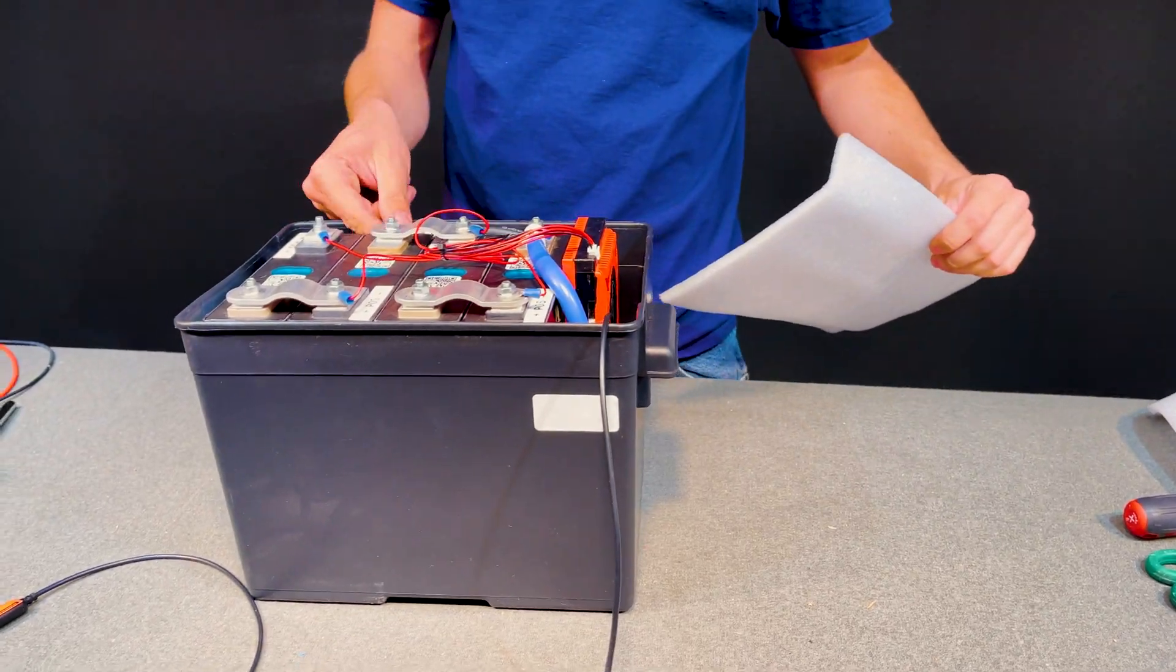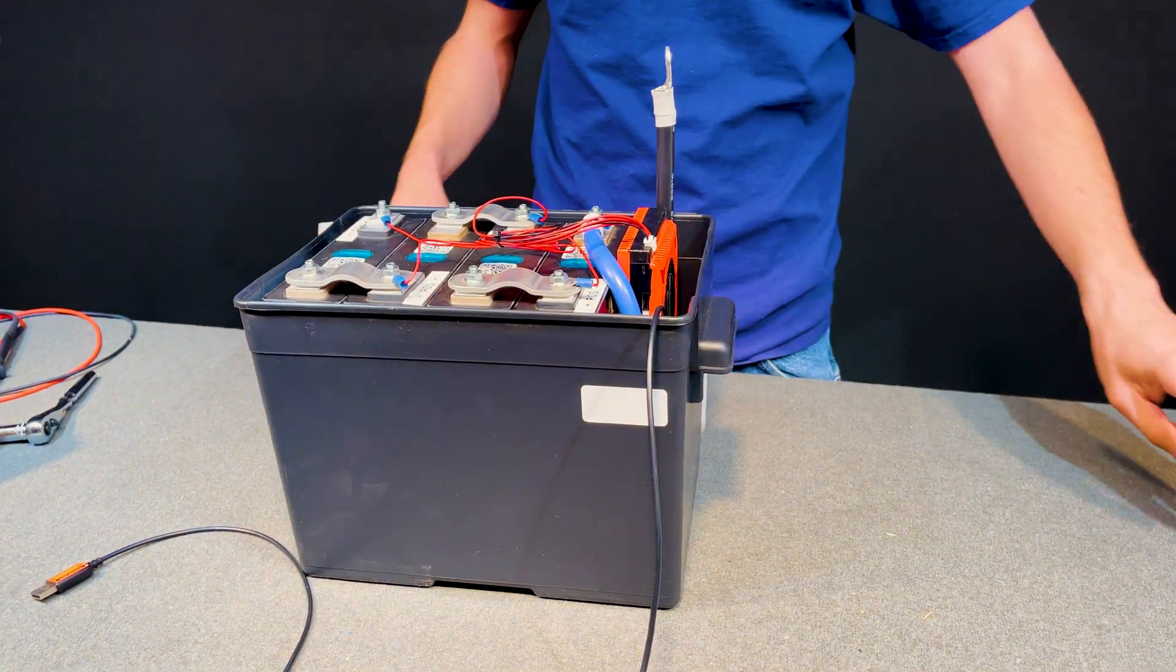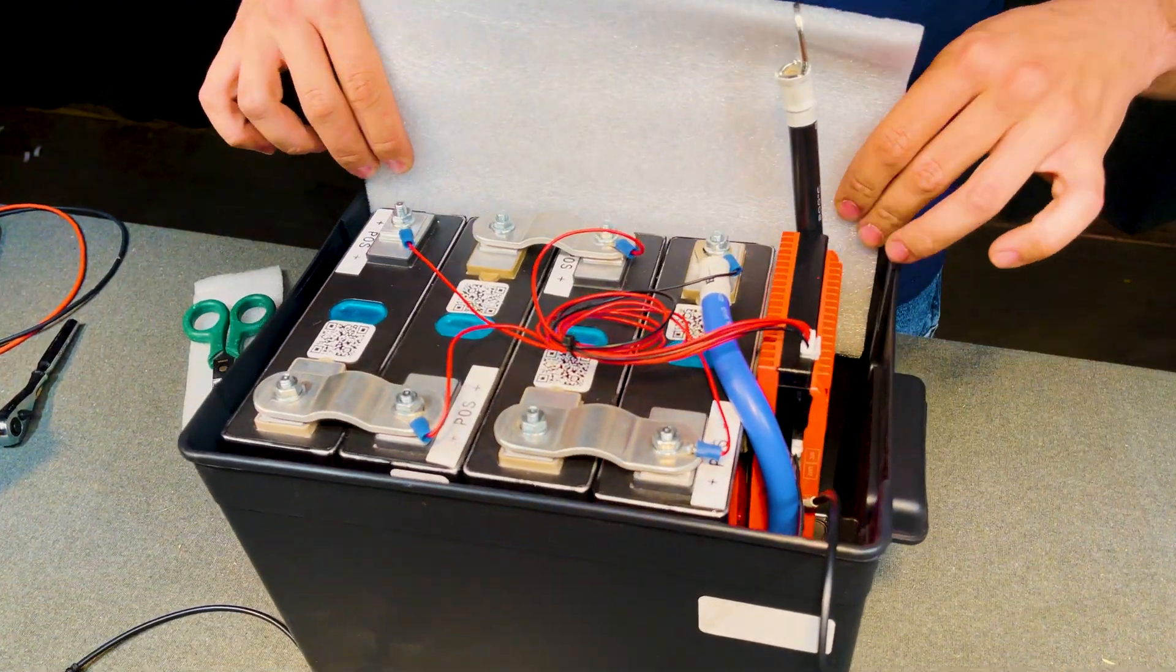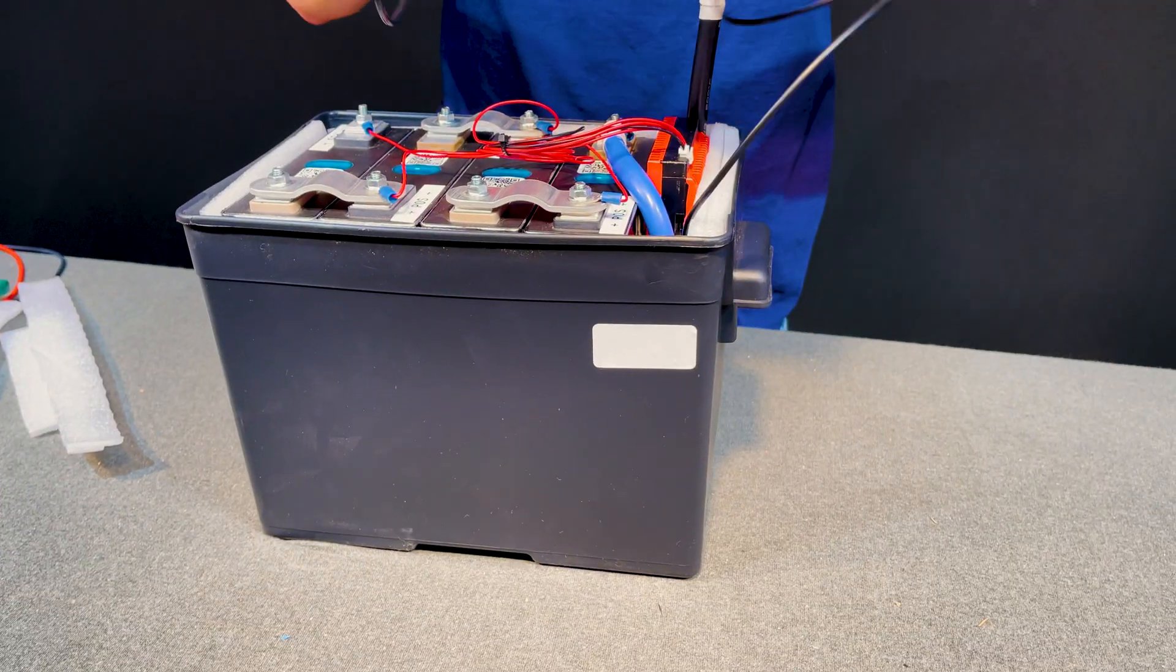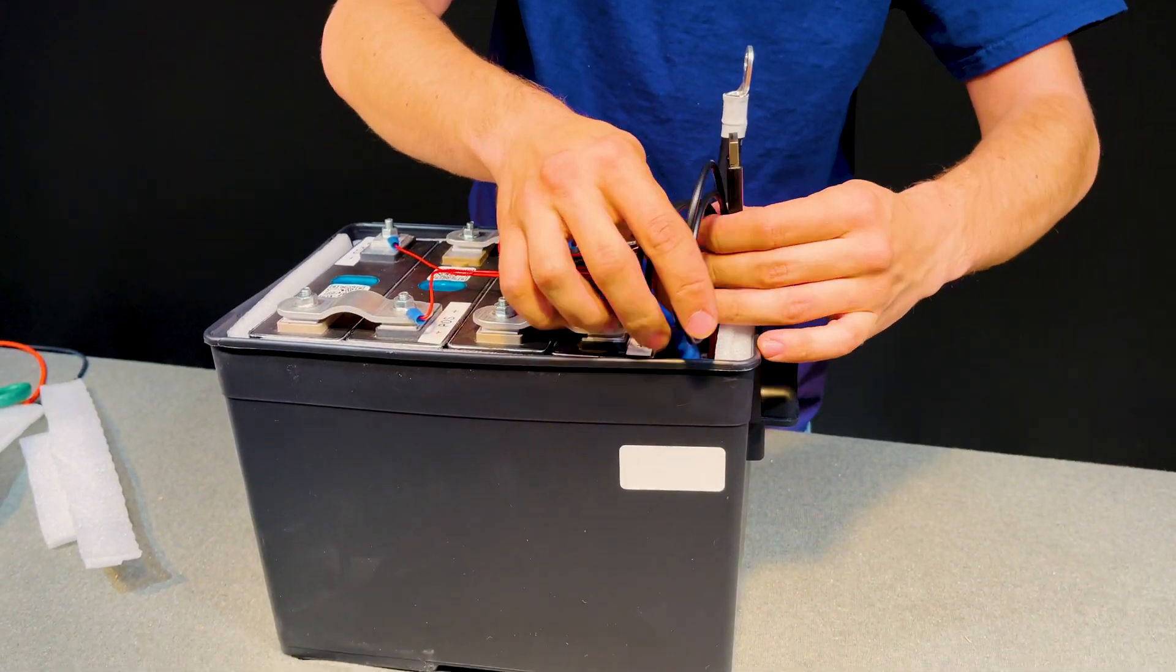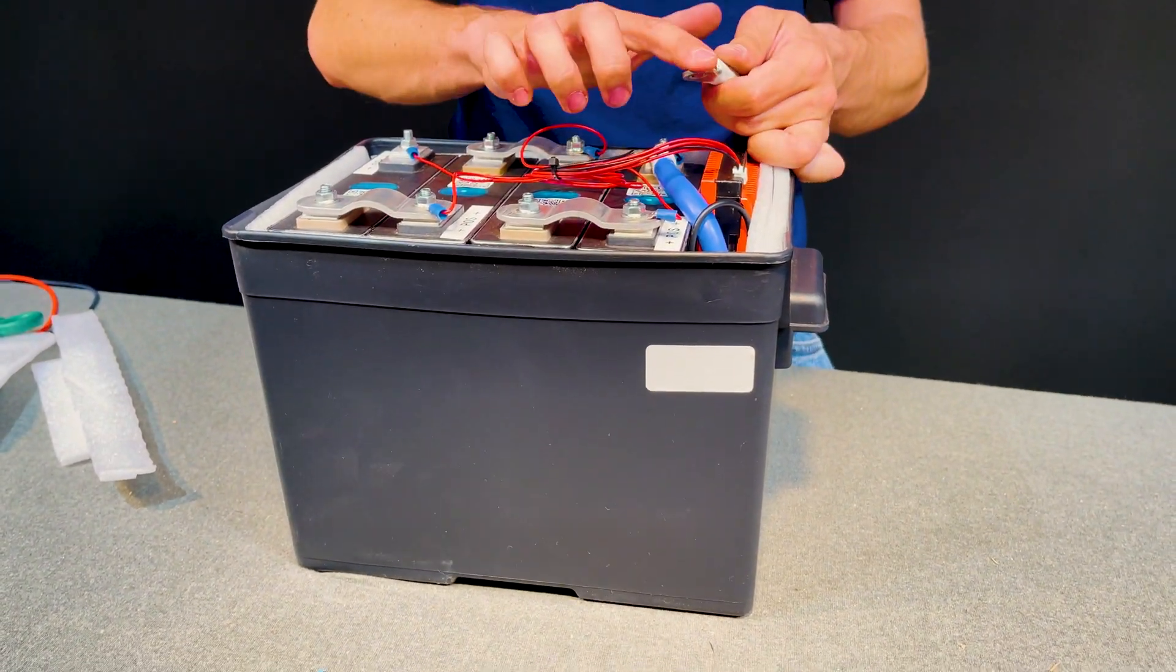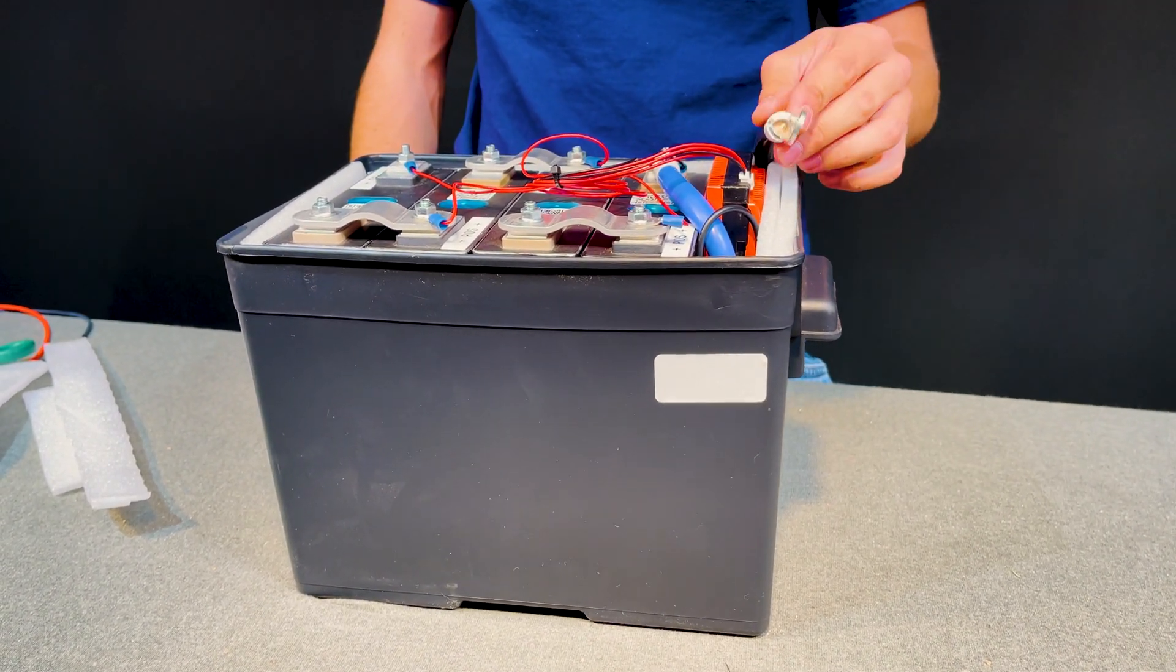A couple other nice things you may want to do is grab some of this packaging material that the batteries came with and cut it to size and install that between the batteries and the edge of the box that way things don't move around on you. And there we go if we don't want to use this USB monitor cable we can just tuck it down here in the side next to the BMS and it's simple as that. Now you just need to connect your negative terminal and your positive terminal and you are good to go.